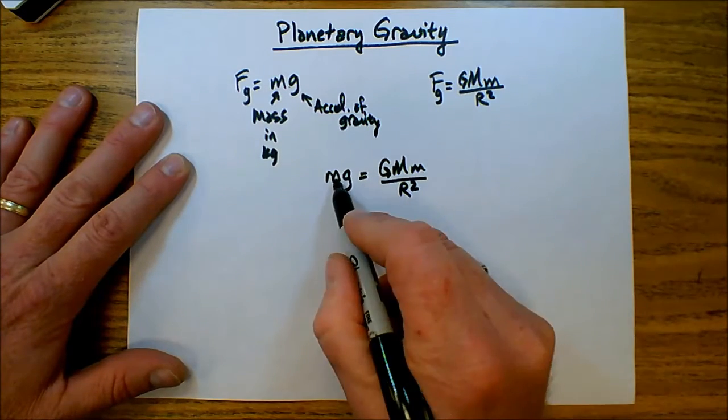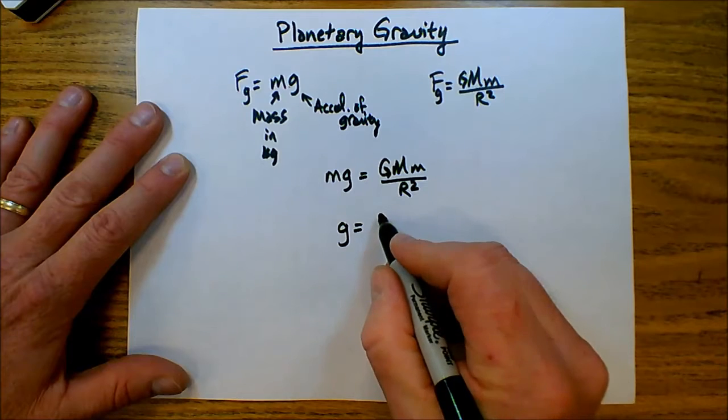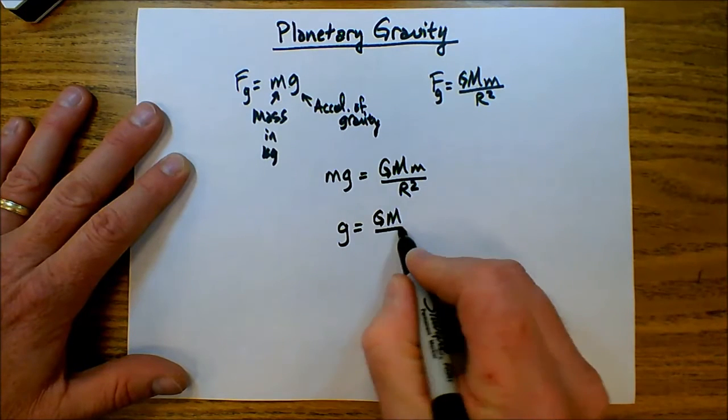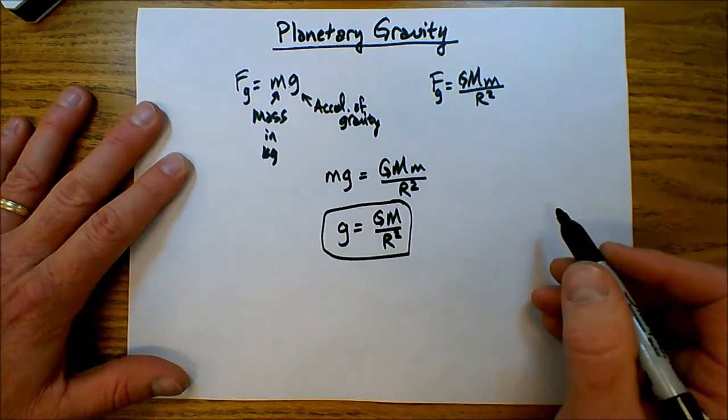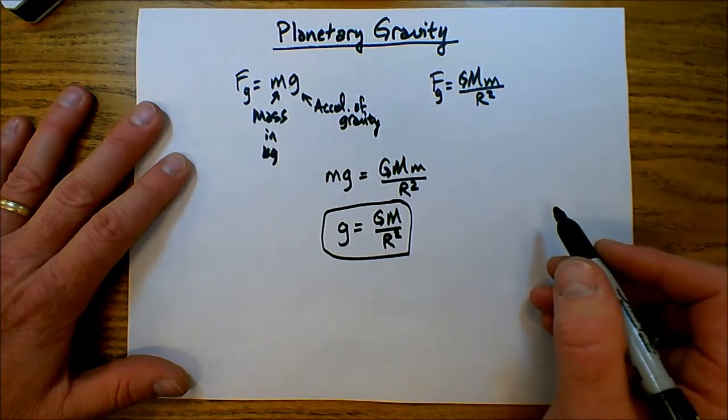And then you can see the mass of the object will divide out giving us the equation for the acceleration of gravity, big G mass of the planet over radius of the planet squared. So this is the formula for the acceleration of gravity near the surface of a planet.